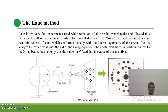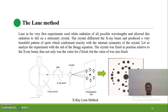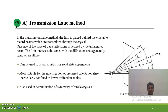In the Laue method, Laue was the first scientist who developed this technique. X-rays are produced from the X-ray tube, and when they interact with the crystals, the slight bending of the crystals produces diffracted X-rays. These X-rays interact with a photographic film. There are two variants: the transmission Laue method and the back-reflection method.